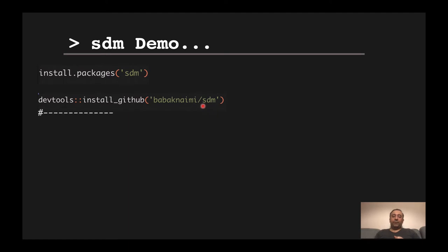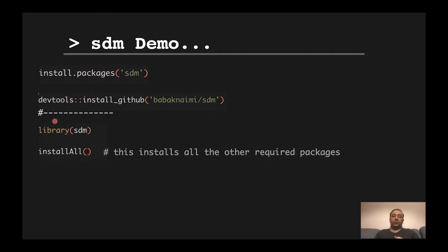When you install the package, simply load it, and for the first time only, run 'installAll()' to install all the other required packages. Because SDM supports 19 algorithms and has many dependent packages, they all need to be installed — using installAll() installs them all automatically.